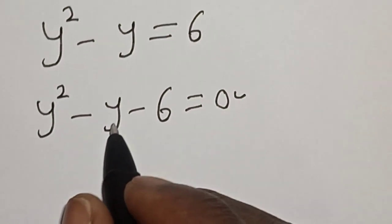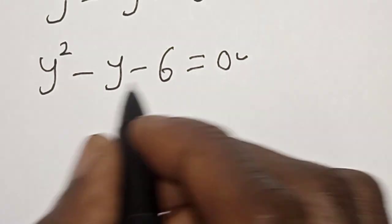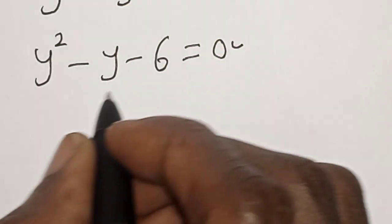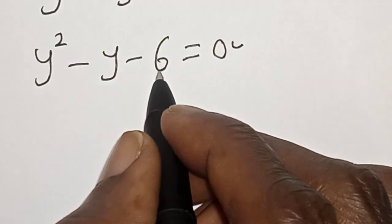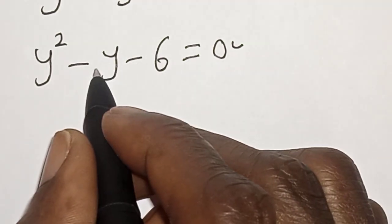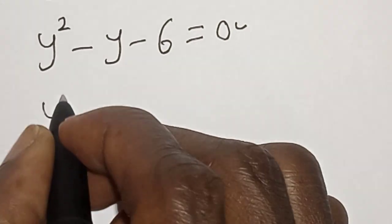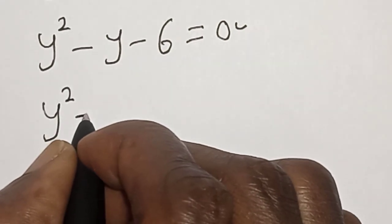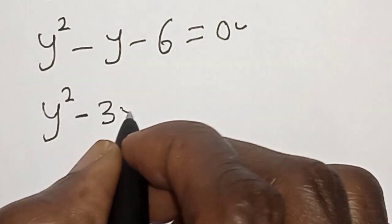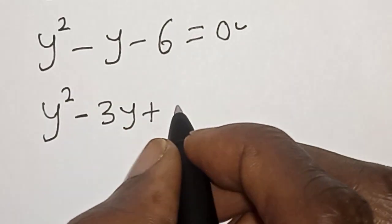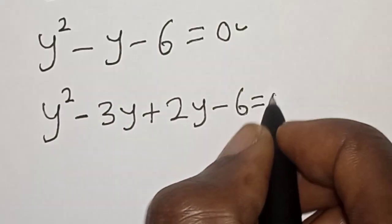We are going to consider both methods to confirm we get the right answer. Using the factorization method first: we look for two numbers such that their product is minus 6 and their sum is minus 1. We get y squared minus 3y plus 2y minus 6 is equal to 0.